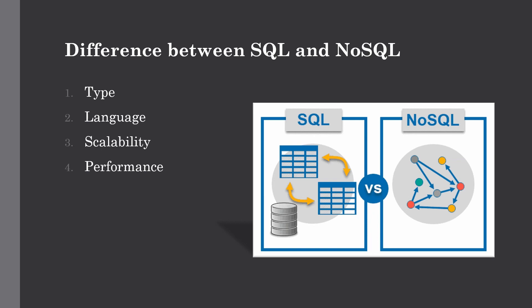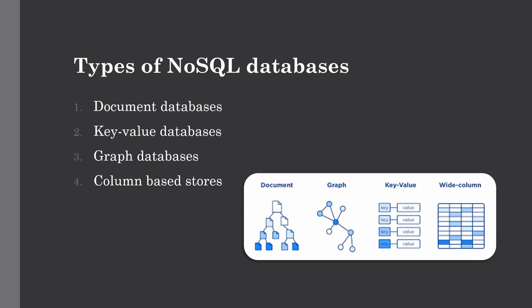For performance: SQL databases are best suited for complex queries but not preferred for hierarchical large data storage. NoSQL is not good for some complex queries but is best suited for hierarchical large data storage. For examples: SQL databases include MySQL, SQL Server, PostgreSQL, Oracle, and SQLite. NoSQL databases include MongoDB, Redis, Bigtable, RavenDB, Cassandra, HBase, and DynamoDB provided by AWS.